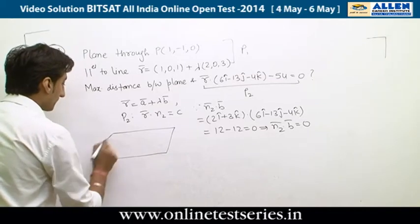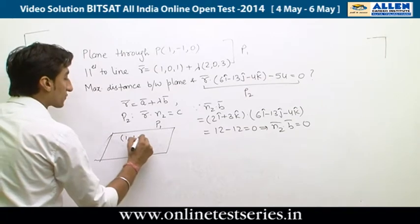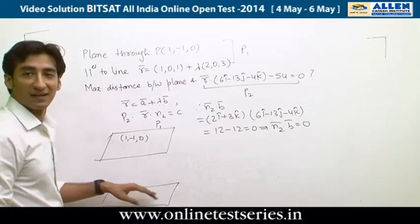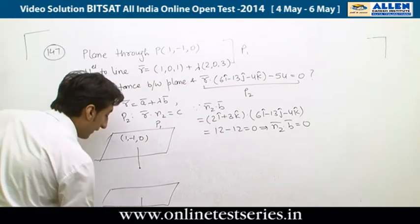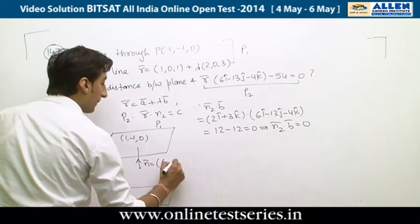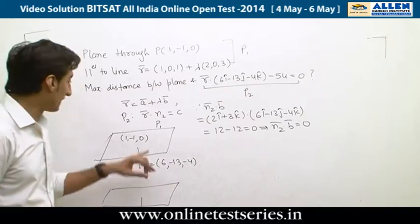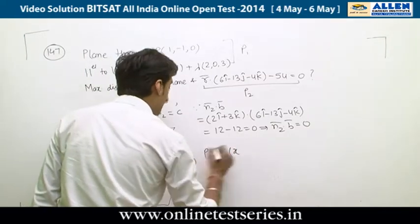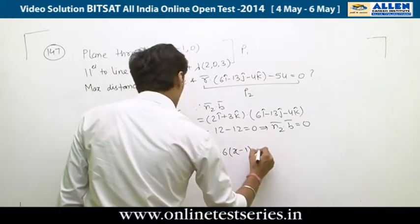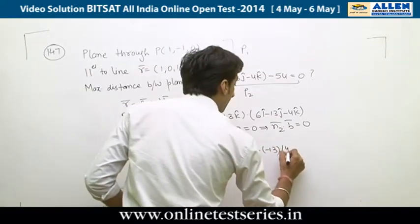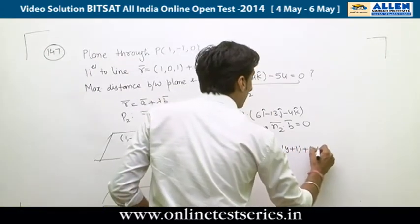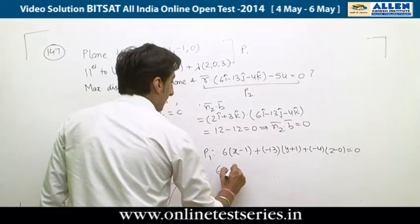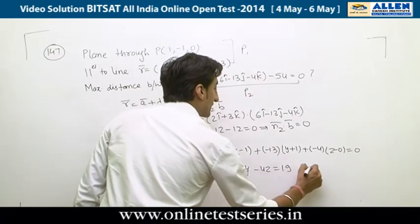Plane P1 passes through point (1, -1, 0). Since both planes are parallel, they share the normal direction (6, -13, -4). The equation of P1 is: 6(x-1) - 13(y+1) - 4(z-0) = 0, which simplifies to 6x - 13y - 4z = 19.